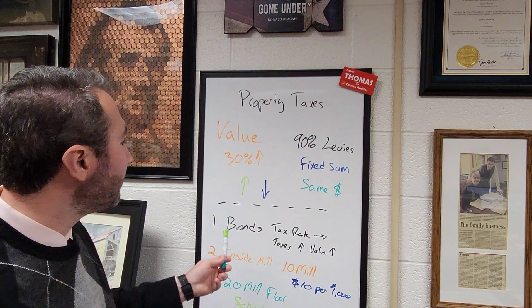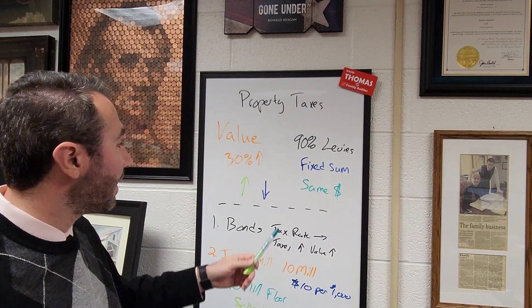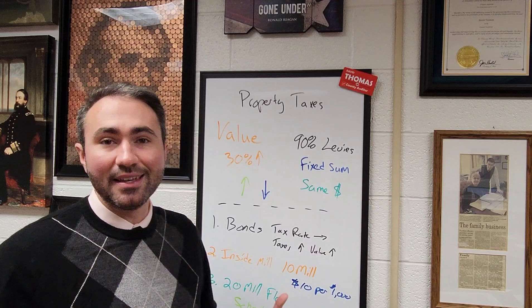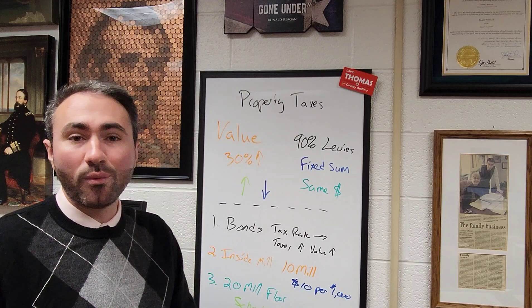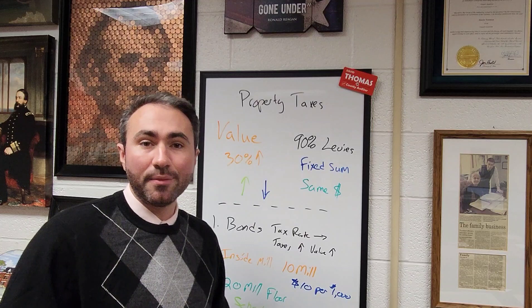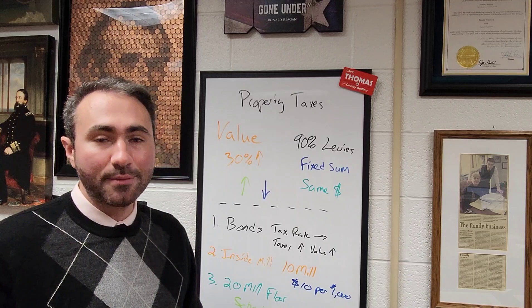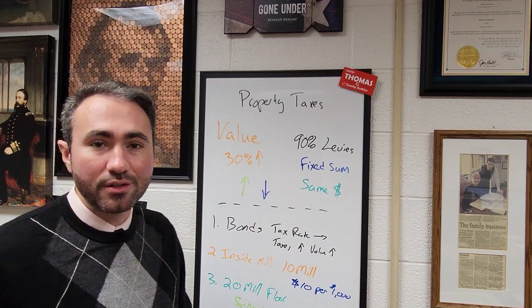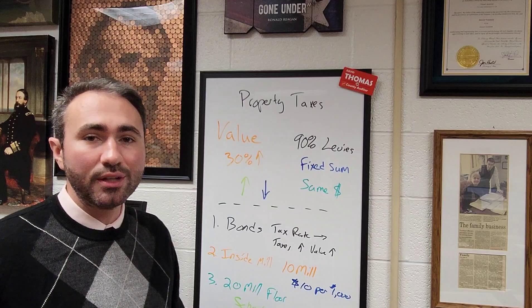Those three reasons — bonds, inside millage, and the 20 mill floor — are why even if your value increases your taxes may increase as well, despite your actual tax rate going down significantly. In some parts of our county with these higher values, we're seeing 10 mills less in tax rate than last year, but values are higher. So for some people they're paying about the same next year; for others it's higher — it depends on your school district and the bonds and levies applied to your value. We're always happy to answer questions, and our website has a tax distribution tool to see the full breakout of where your dollars are going.